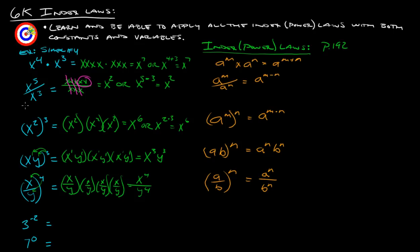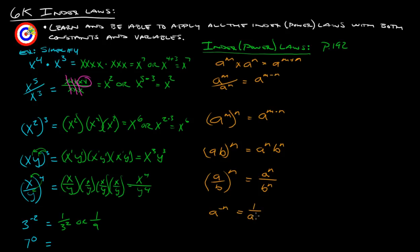The sixth law: 3 to the negative 2nd. What you want to do is take this negative exponent and move it to the bottom, so it's 1 over 3 squared. You could write it as 1 over 9 if you really wanted to, but either way is fine. That power law is written as: a to the negative n equals 1 over a to the n.